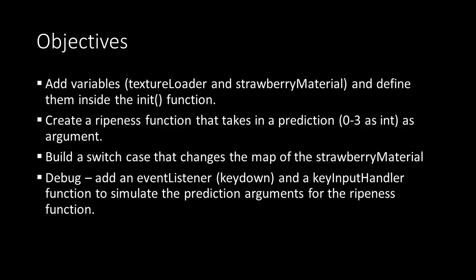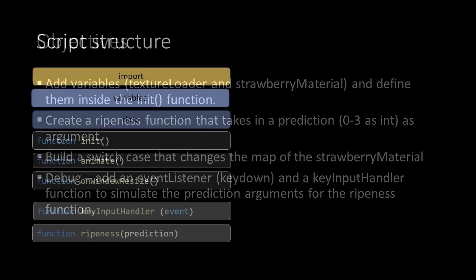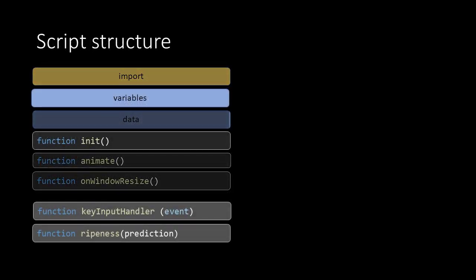For debugging purposes we'll add an event listener in our init function that enables us to change the textures with the keys 1, 2, 3 and 4. For the structure this means that we'll add some variables at the top of the script and make some changes in the init function like defining the strawberry material and adding the event listener that listens to the keydown event.